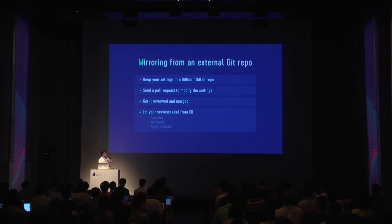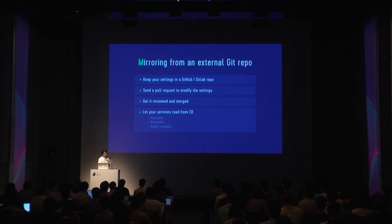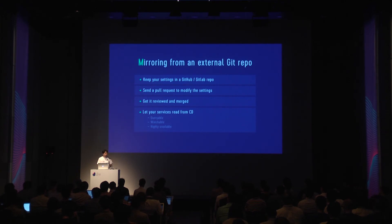The last feature I want to introduce is git mirroring. These days when we make changes in software we don't push commits directly to a source code repository — instead we send a pull request, get it reviewed by teammates, and then merge it. The idea behind this feature is to use the same process for configuration changes. There will be much less chance of making a mistake if a configuration change is reviewed by teammates before it's applied, since configuration changes can cause regressions or catastrophic failures even without changing any code.